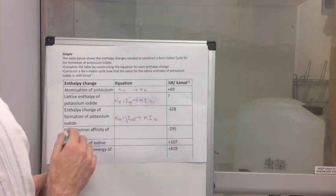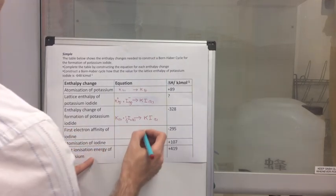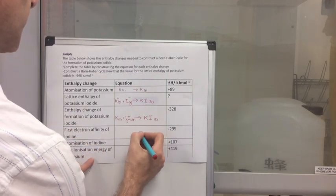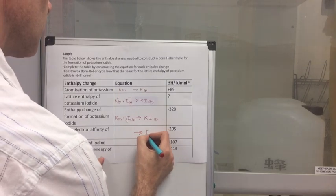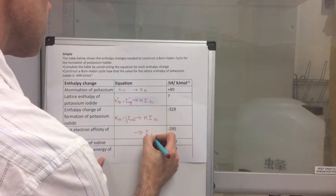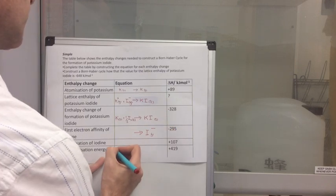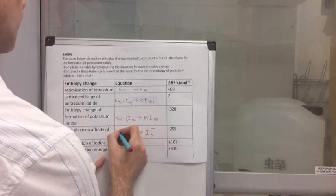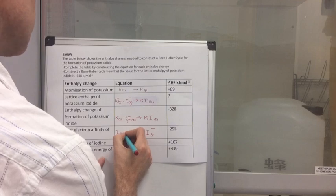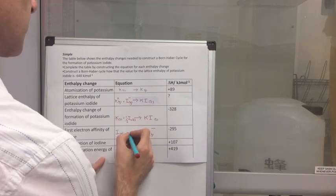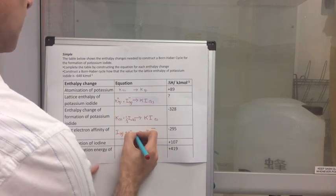The first electron affinity of iodine. In electron affinity you are producing one mole of gaseous one minus ions from one mole of gaseous atoms. So how do you turn that into that? You add a mole of electrons.